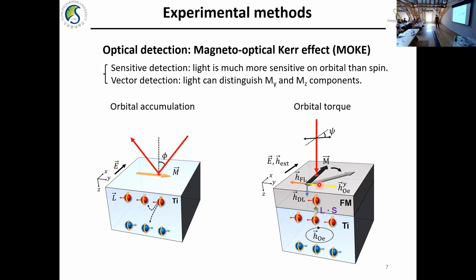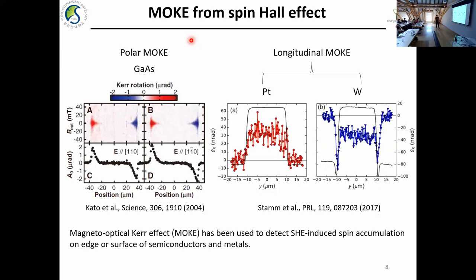MOKE has already been used for the spin community. For example, prior measurements done with MOKE and GARMAS measured the out-of-plane spin accumulation on the channel edge. This is possible because the spin diffusion length is very long — on the order of micrometers — so you can detect the edge spin accumulation. For metallic systems, you cannot measure edge spin accumulation because the light scale is a few nanometers, which is too small for light detection. In that case, they measure the longitudinal mode, measuring the y-component of magnetization on the top surface. Using this technique, they measure the spin Hall noise on the sample.